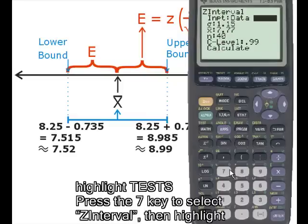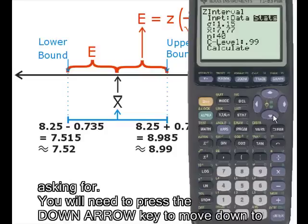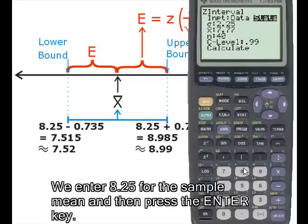Then highlight STATS and then press ENTER. Now we just enter in the values for each one they are asking for. You will need to press the down arrow key to move down to the next line. We enter 2.25 for the population standard deviation and then press ENTER. We enter 8.25 for the sample mean and then press the ENTER key.